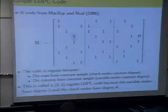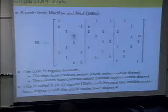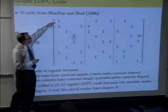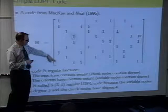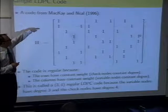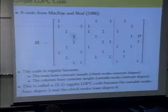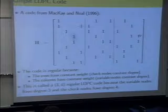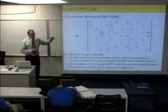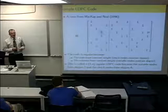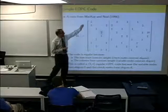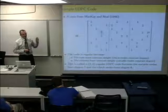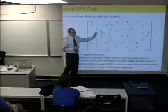Here's an example of an LDPC code. The rows have weight 4 and the columns have weight 3, so we call this a (3,4)-regular code — regular meaning all columns have the same weight and all rows have the same weight. We'll see later that although a regular LDPC code gives good performance, you're actually better off with an irregular LDPC code where column weights differ from one column to the next. In order to achieve capacity, you actually need an irregular parity check matrix.